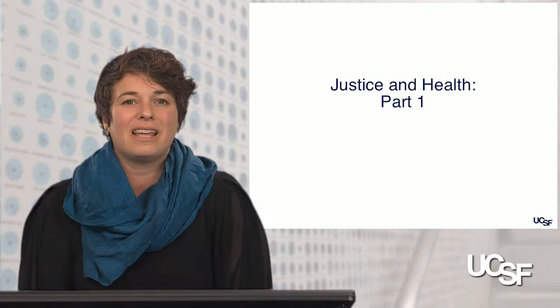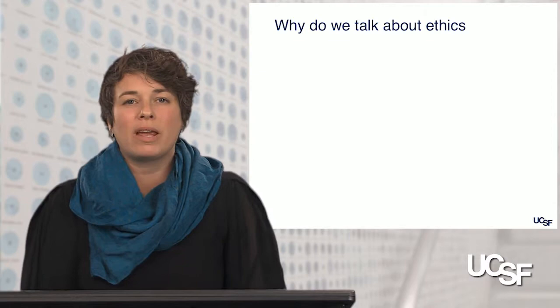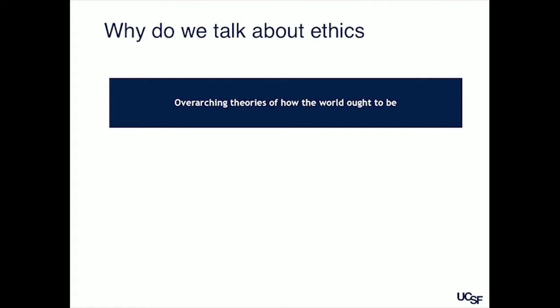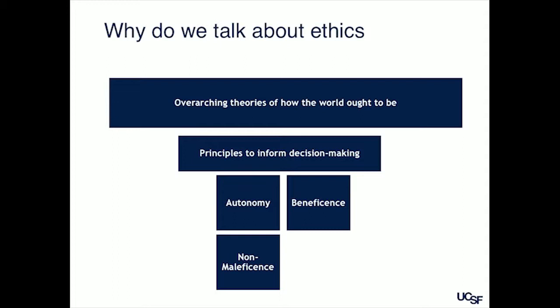Why do we talk about ethics? Fundamentally, we are trying to hone your gut instincts about what you think is right and wrong, and then give you some language to talk about it. When I think about ethics, I think about the overarching theories of how the world ought to be. Other people have said, well, let's go with mid-level principles that everyone can agree are relevant to informed decision-making. That's called principalism. You probably are familiar with four of these. Autonomy, beneficence, and non-maleficence are three we're not going to talk about today. We're going to focus on justice.